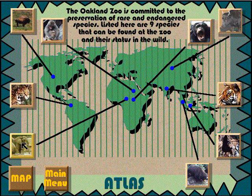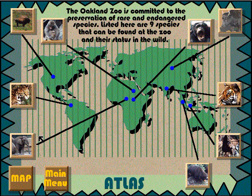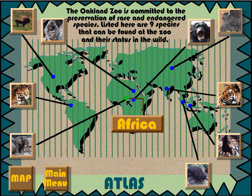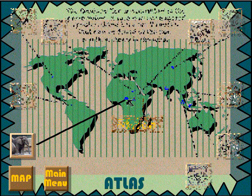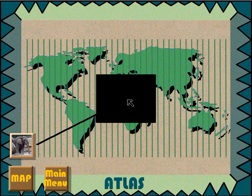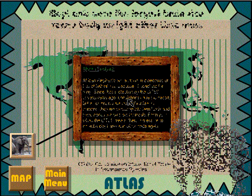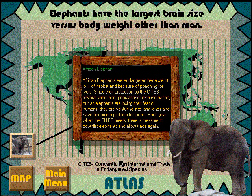Let us try another way to get to the Elephant — we can do this by location. Follow the black line from the Elephant to the end and you will see a blue button. Notice the cursor over this blue button; it tells you the name of the continent that the animal lives on. You can click on this blue button and get the same result as the Elephant button. The same applies for the rest of the animals. Now let's move on to the zoo map by clicking the Map button.